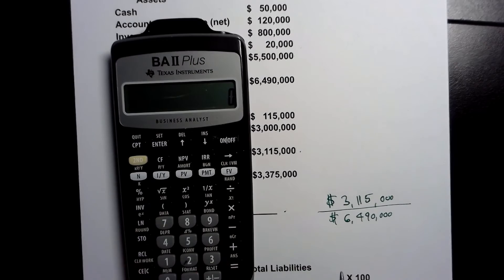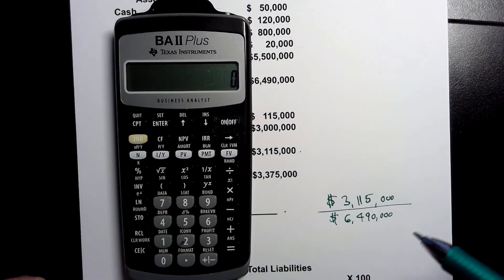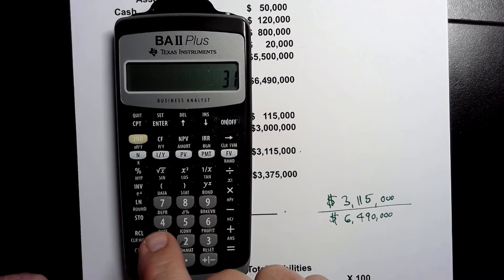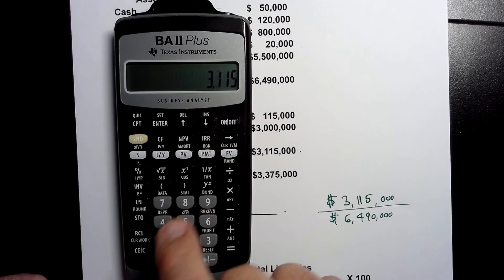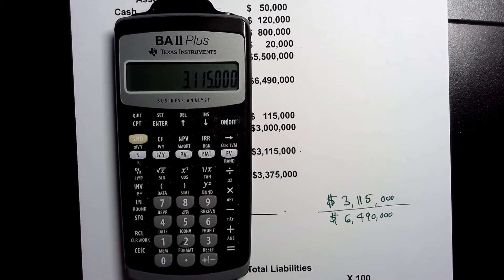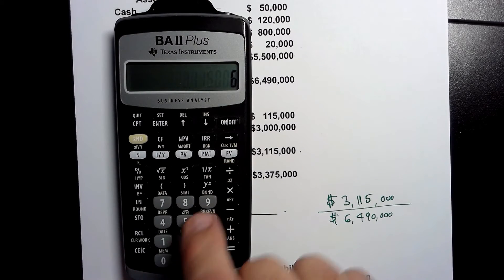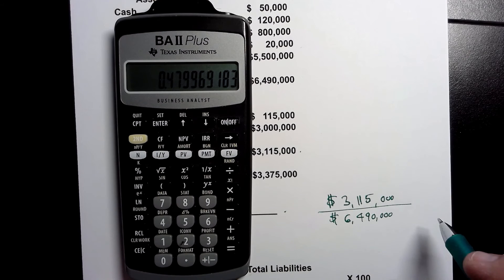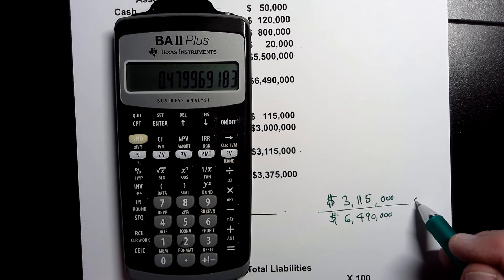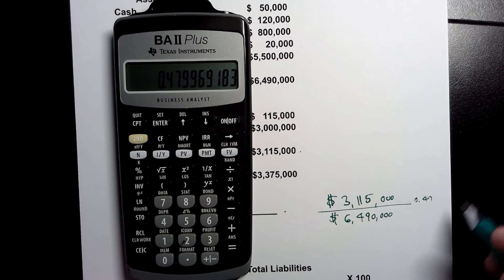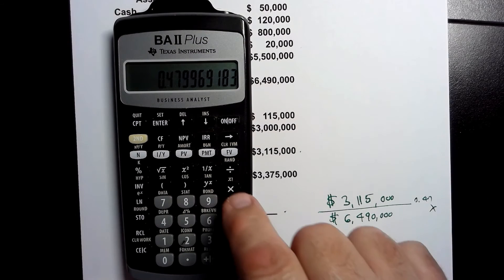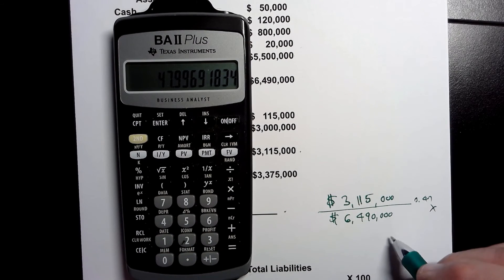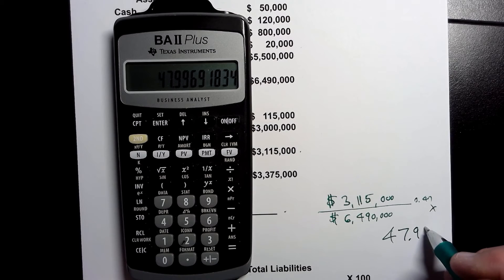I'm going to pull out my trusty BA2 Plus calculator — if you need a calculator similar to this there are some good ones linked in the video description below. So I have three million one hundred and fifteen thousand as our numerator, and I'm going to divide by six million four hundred and ninety thousand as our denominator and get an answer of zero point four seven seven nine nine. I'm going to multiply that by a hundred to turn it into a percentage.